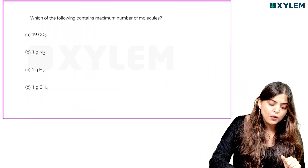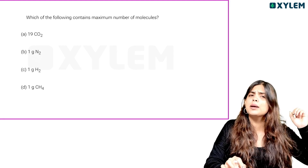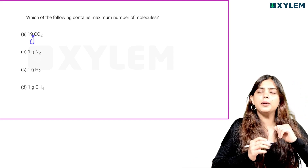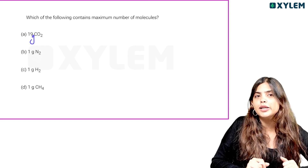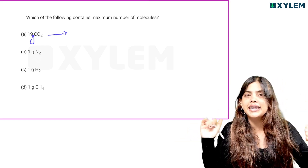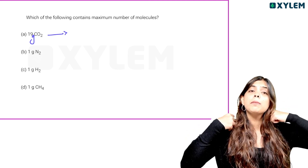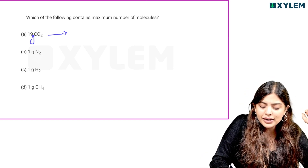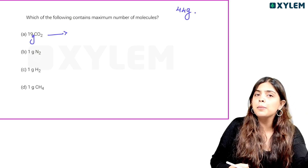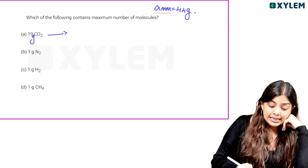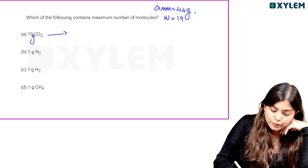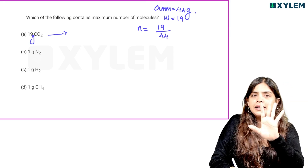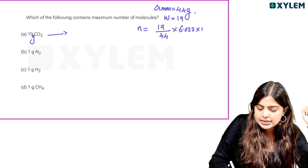The next question: which of the following contains the maximum number of molecules? To find the number of molecules we convert using moles. For CO2: 1 mole is 44 grams. The number of moles for 11 grams = 11 divided by 44. We do not simplify further yet.